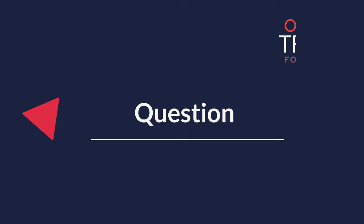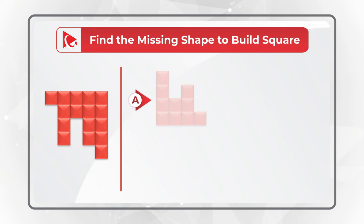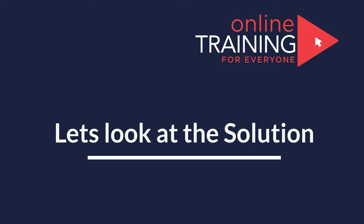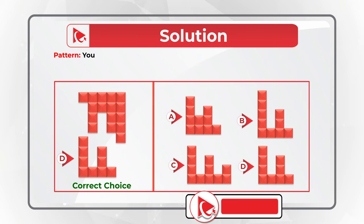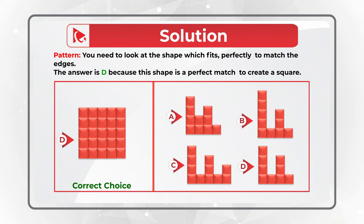Here is a very interesting question to test your spatial reasoning. You are presented with a partial square and you need to find the missing shape to build the full square. You have four choices: A, B, C, and D. The correct choice here is choice D. To get to this answer, you need to look for the shape which fits perfectly to match the edges. Since this is a 5 by 5 square, choice D is the perfect shape because it matches perfectly to create a full square.